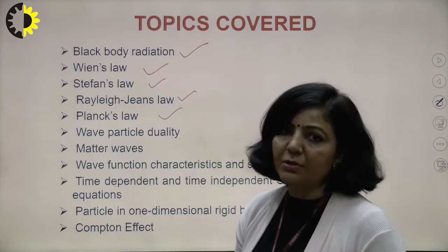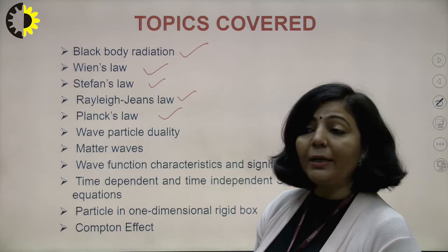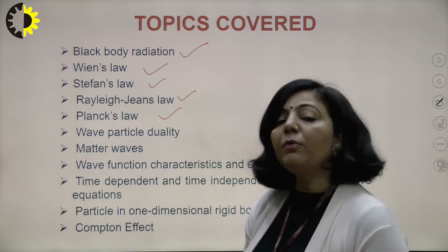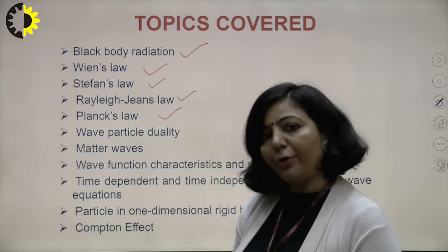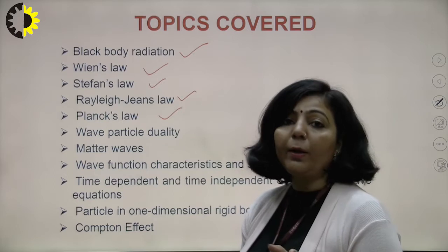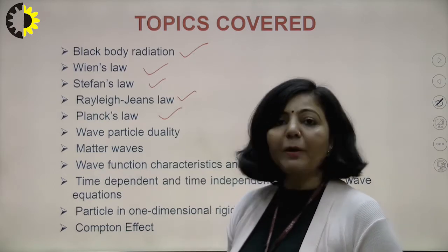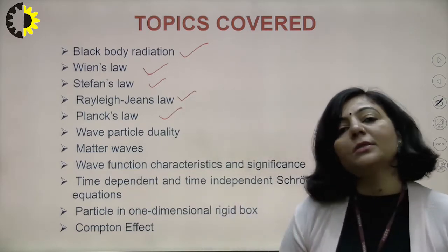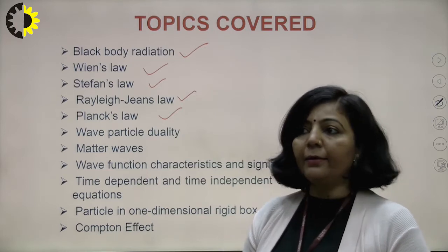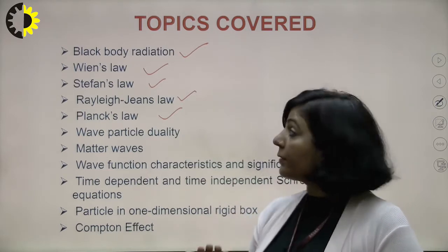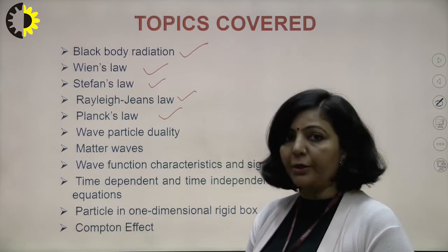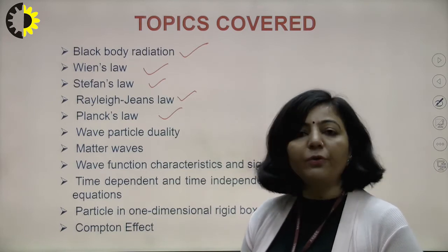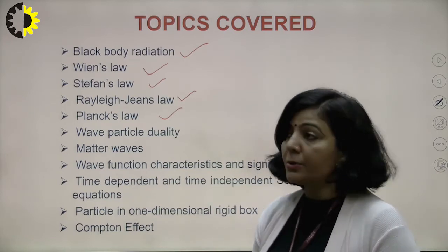A black body is one which can absorb all radiation incident on it, and if kept at temperature T, it emits radiation of all possible wavelengths. These emitted radiations are known as black body radiations, and a graph of intensity versus wavelength is the black body radiation spectrum. That spectrum was discussed by different scientists, giving rise to the black body radiation curve.